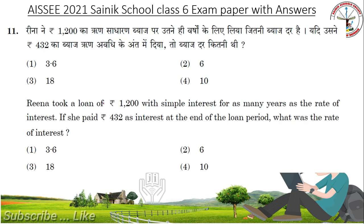Reena took a loan of 1200 with simple interest for as many years as the rate of interest. If she paid 432 as interest at the end of the loan period, what was the rate of interest? Answer: 6.